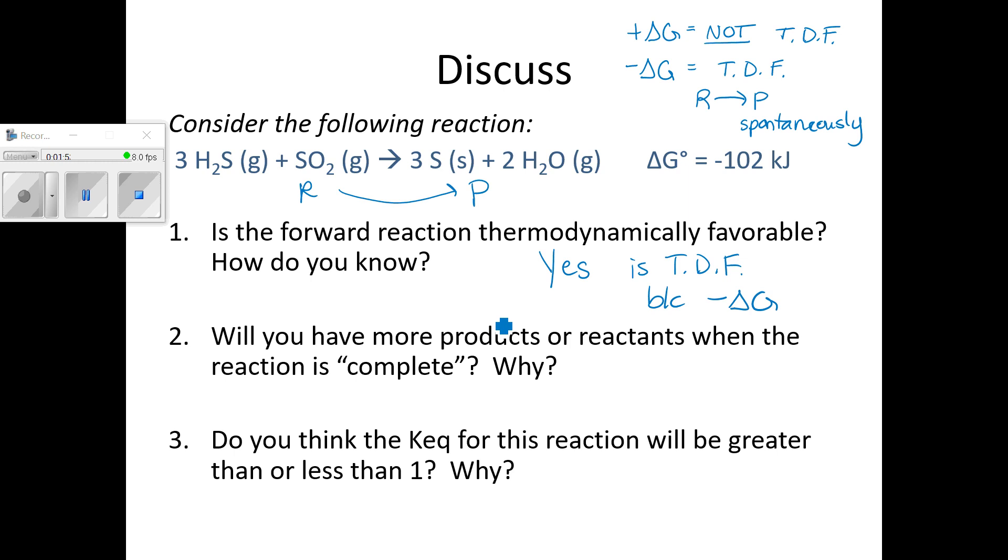Negative delta G means it's favorable, means reactants are going to spontaneously turn into products. Therefore, I'm going to expect to have more products at equilibrium. Because that forward reaction is thermodynamically favorable. Therefore, as a result, when I measure the equilibrium mixture for this reaction and I try and calculate the K value, our K value is a ratio of products over reactants. So I expect to have more products than reactants in this scenario, since that reaction is favorable. So I should see a K value that is going to be greater than 1.